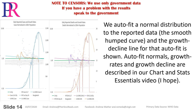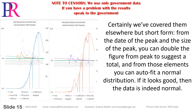Auto-fit normals, growth rates, and growth decline are described in our Chart and Stats Essentials video. Certainly we've covered them elsewhere, but short form: from the date of the peak and the size of the peak, you can double the figure from peak to suggest a total, and from those elements you can auto-fit a normal distribution. If it looks good, then the data is indeed normal.